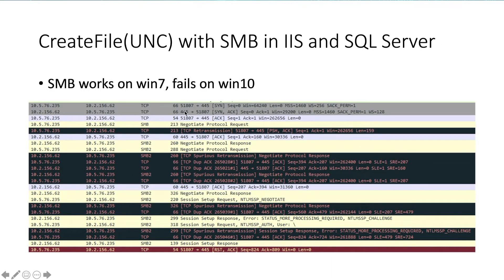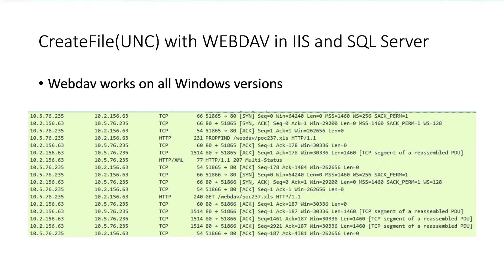If we set up an SMB server, it works on Windows 7 but fails on Windows 10 — we guess there might be some mitigations to address SMB NTLM hash leak issues. If we set up a WebDAV server, IIS and SQL Server successfully retrieve the external database file from the remote WebDAV server. It works on all Windows versions.